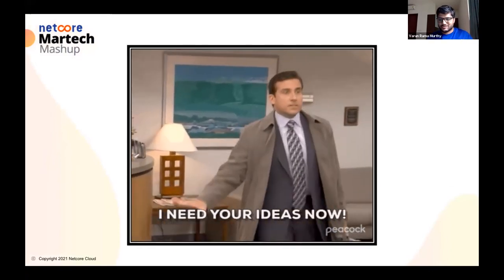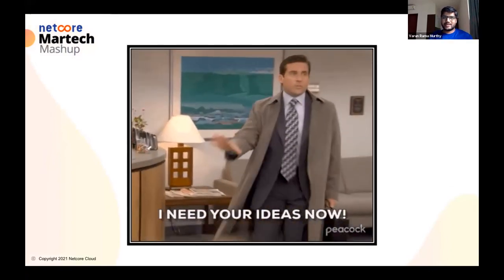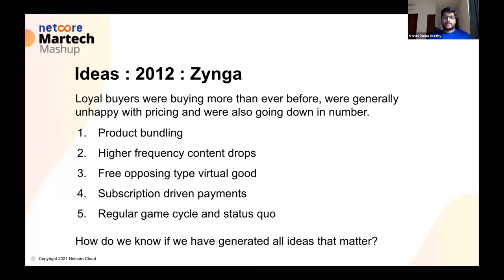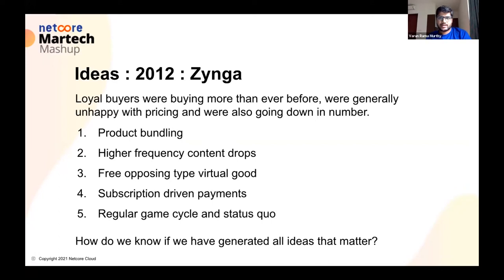We went into this entire sort of huddle and had the entire observation set in front of us. It was time for some ideas — 2012, Zynga, Yovil. Remember, our ARPPU was actually going up but our paying users were going down. We had a bunch of observations. So here were five ideas we brought to the table. One was product bundling — what if we bundle a few products together and sell them at a certain price? What if we actually increase the content drops — instead of every two weeks, what if we do it every one week? Another idea was for clothing buyers, give something for furniture, and for furniture buyers, give something on clothing for free. And one of the other ideas was: what about a subscription-driven payment, where players pay for subscriptions and then everything else is up for picks?